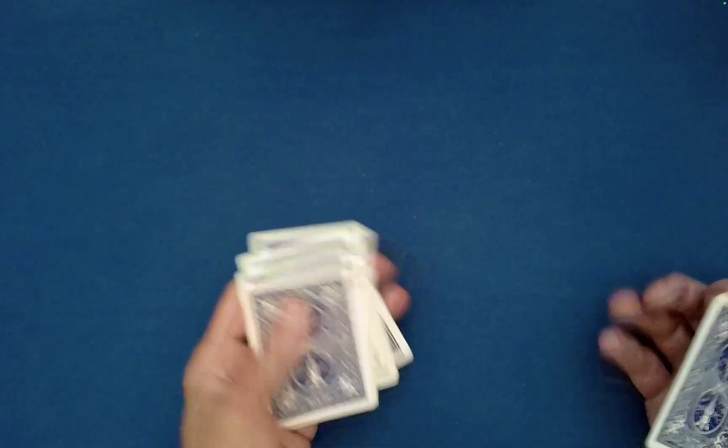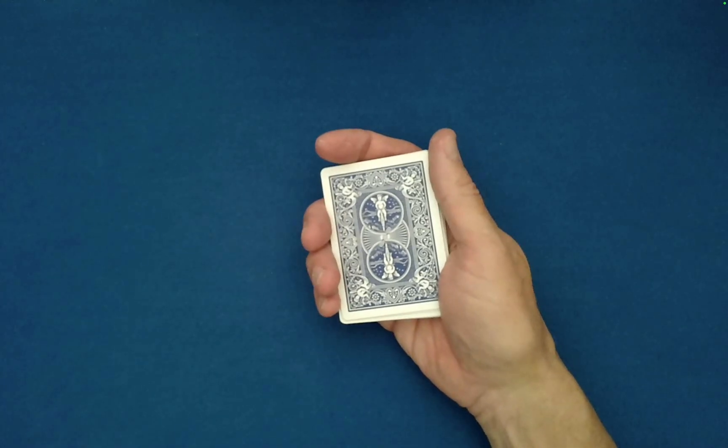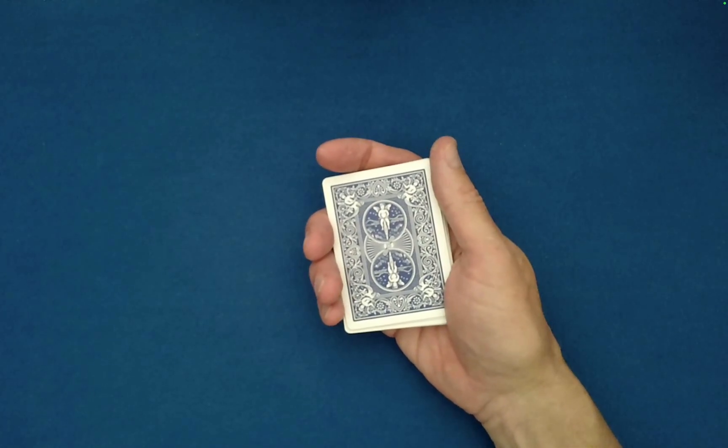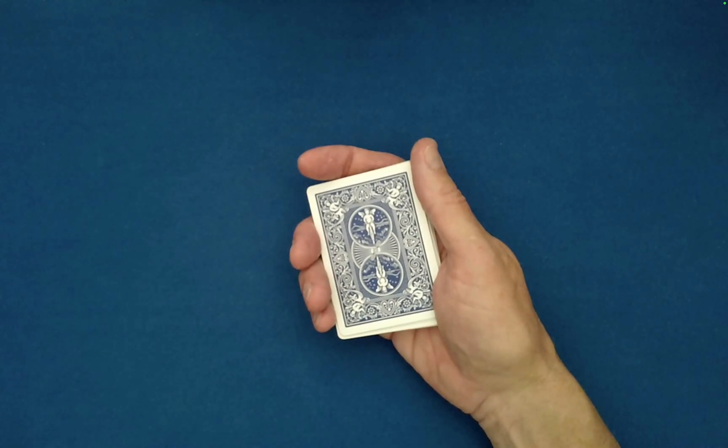And now I need you to tell me the identity of your card with the proviso that you may lie if you choose to. So what card did you see? Three of clubs. Are you sure? Okay that's very good.